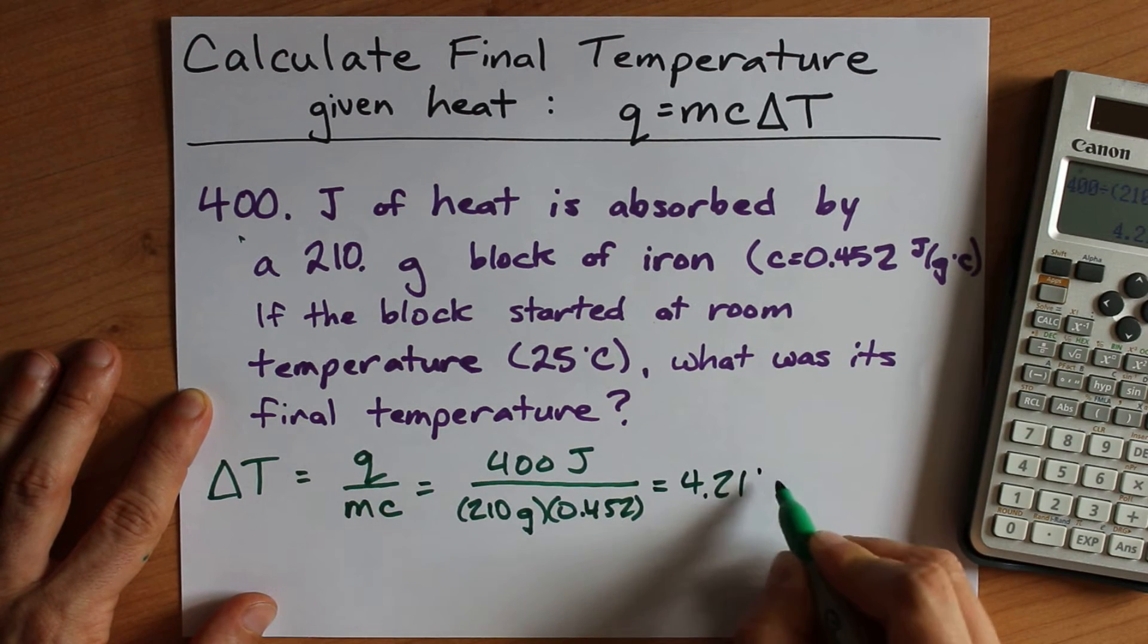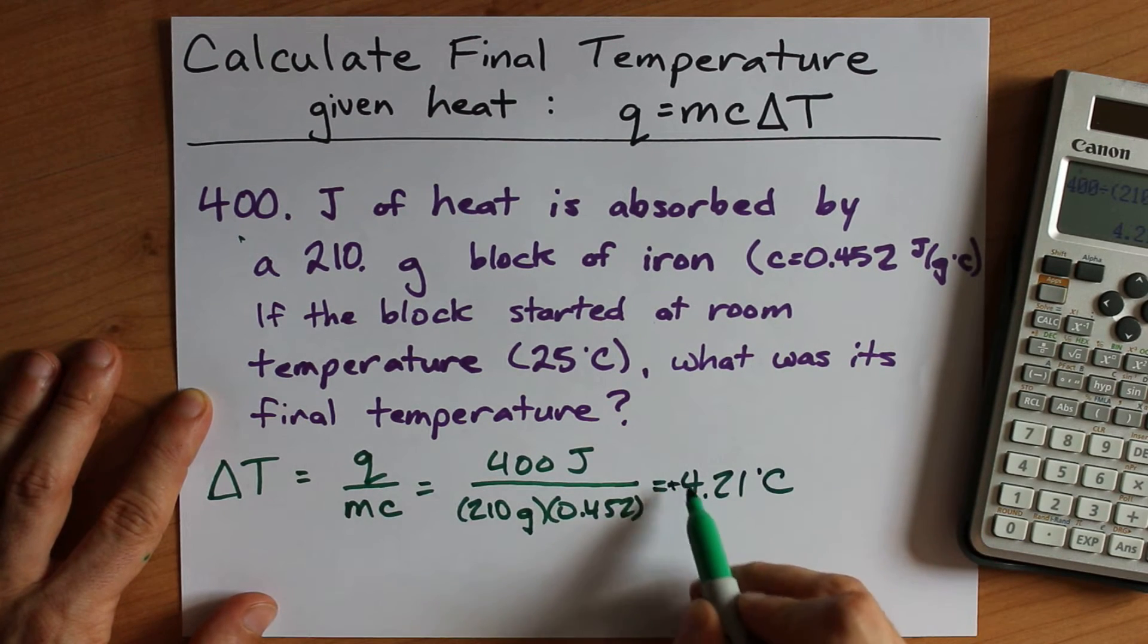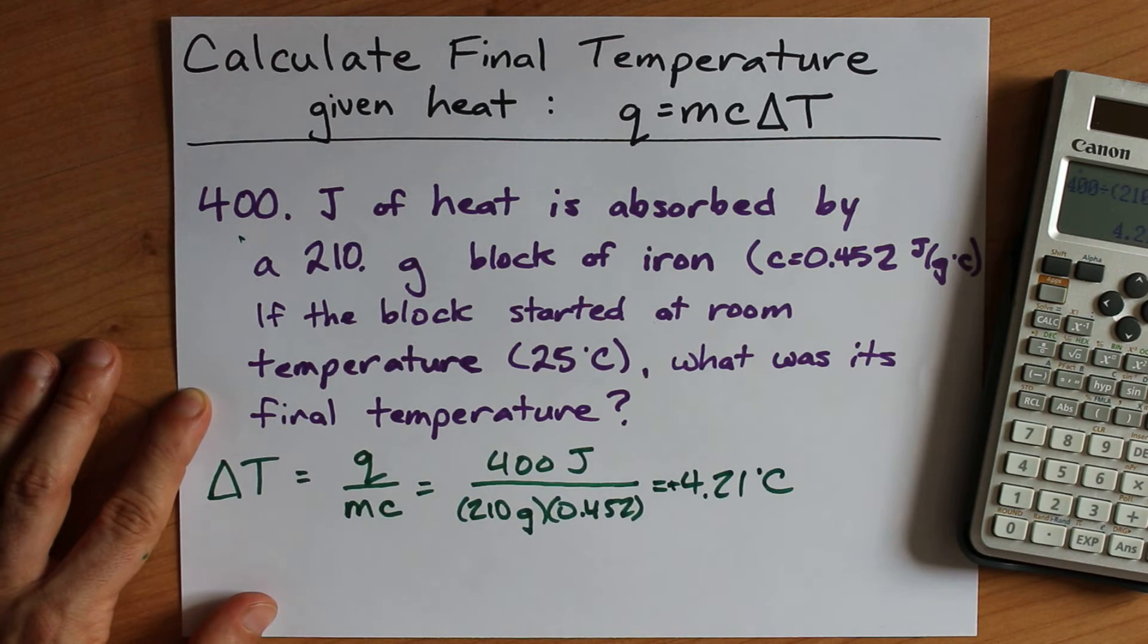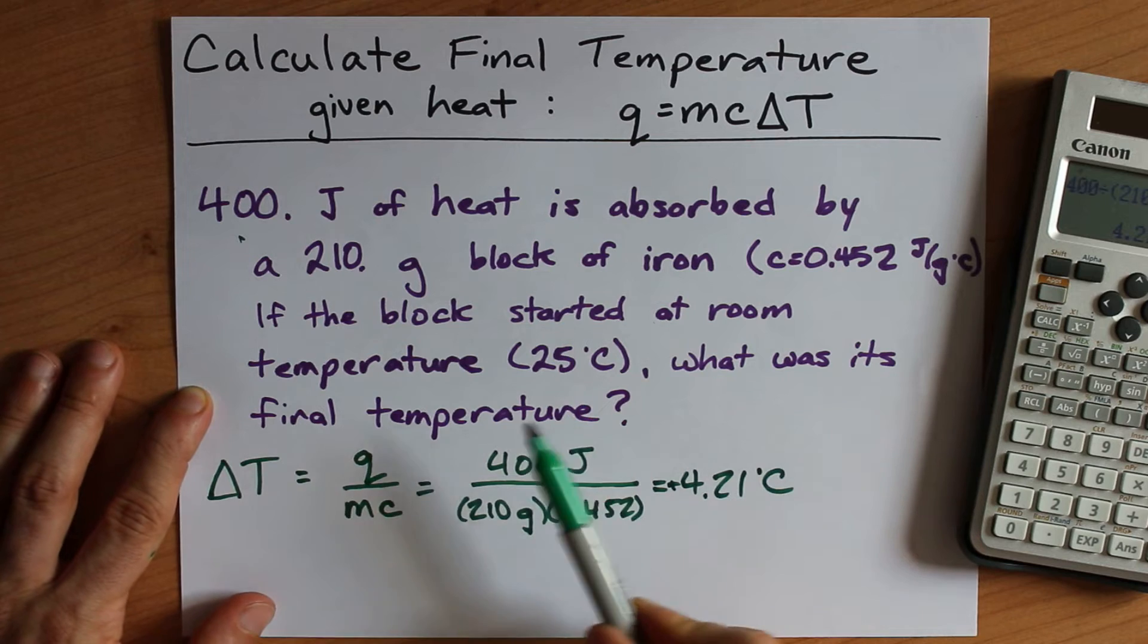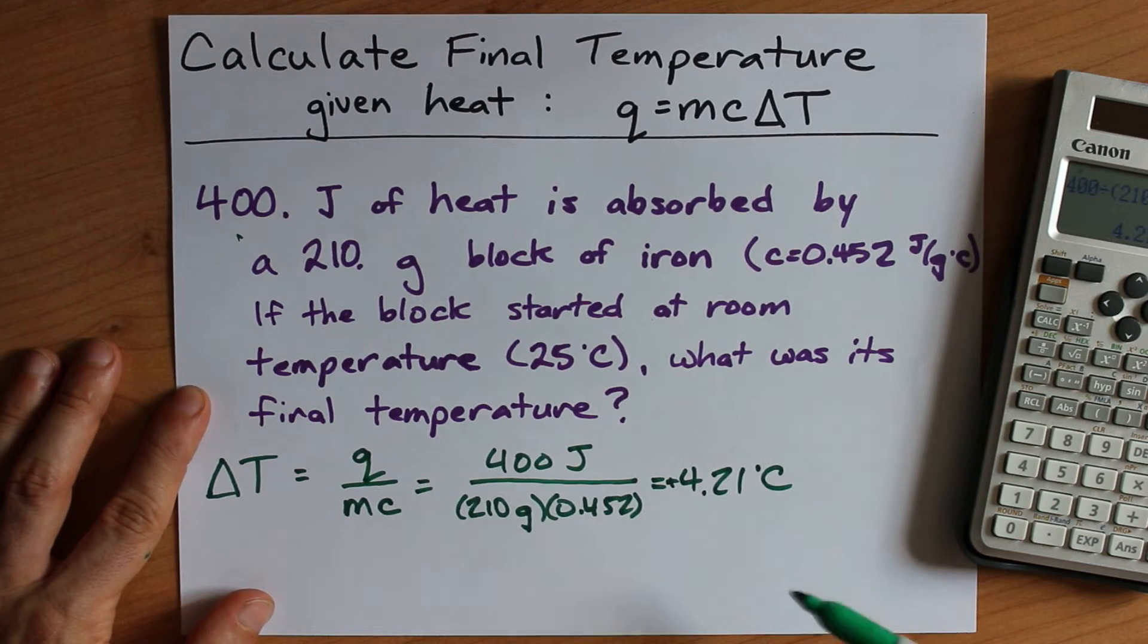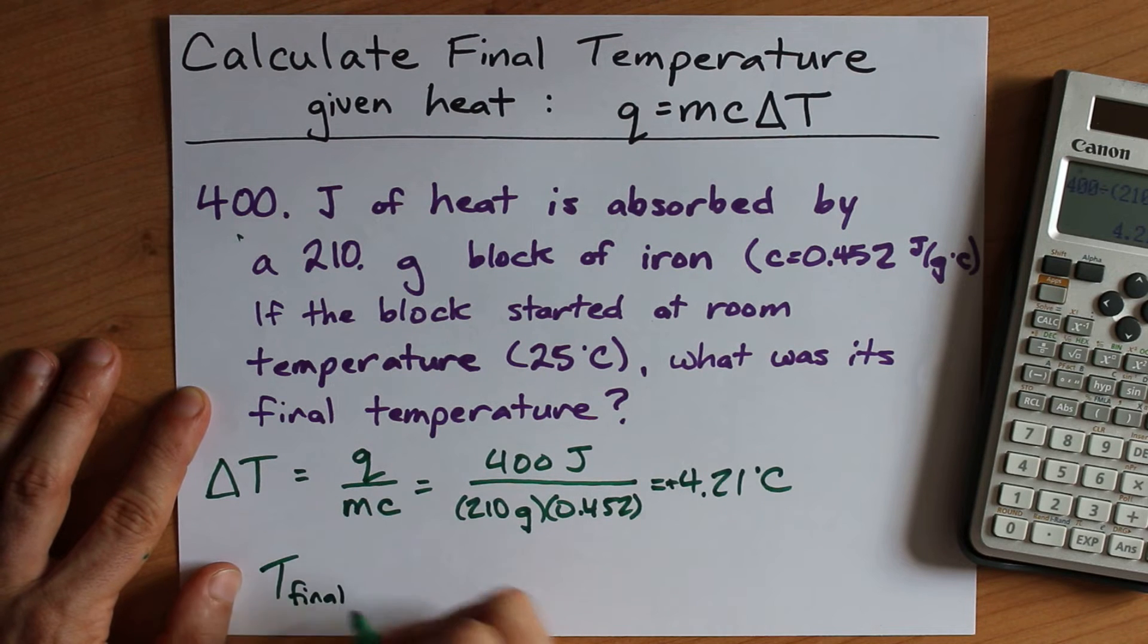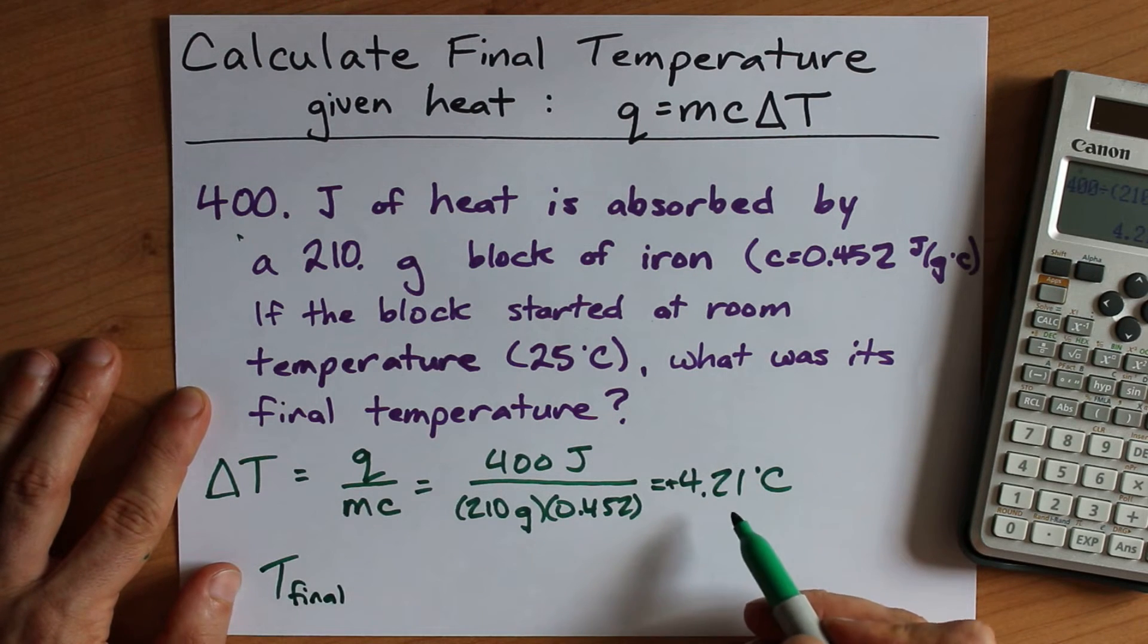which is positive because the temperature is going up when heat is absorbed. Now, if it starts at 25 and it goes up by 4.21 degrees Celsius, it's probably pretty obvious that t final is 29.21.